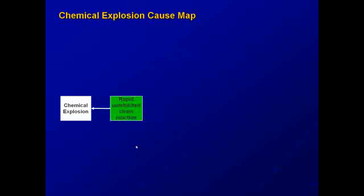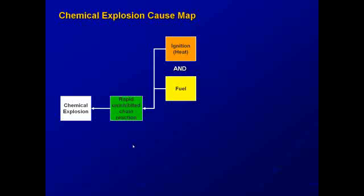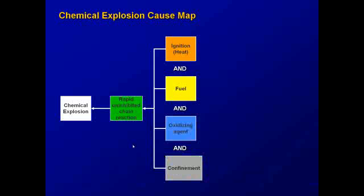Now we'll move on to chemical explosions. Chemical explosions, one of the common types of industrial explosions, result from a rapid uninhibited chain reaction. That uninhibited chain reaction is caused by an ignition source or heat, fuel, an oxidizing agent, and confinement.